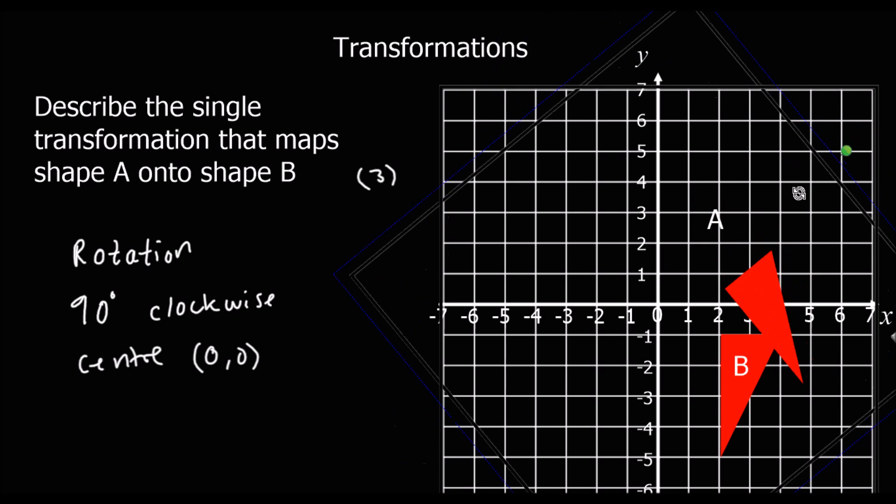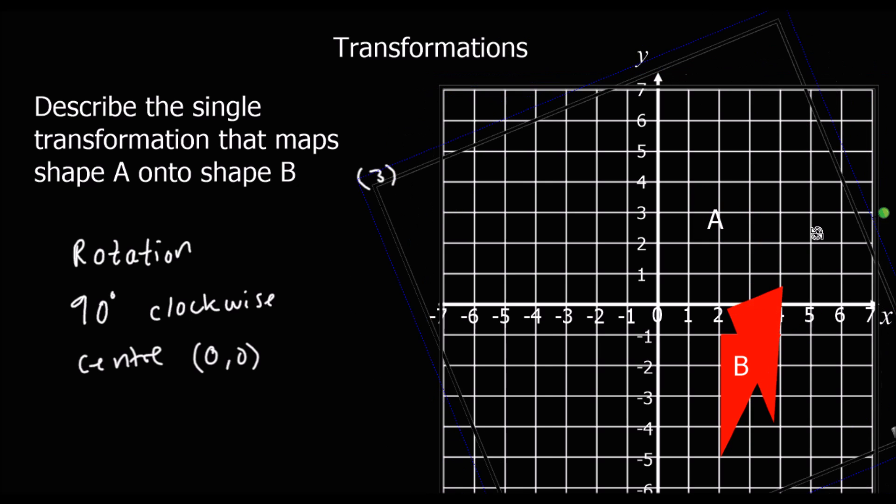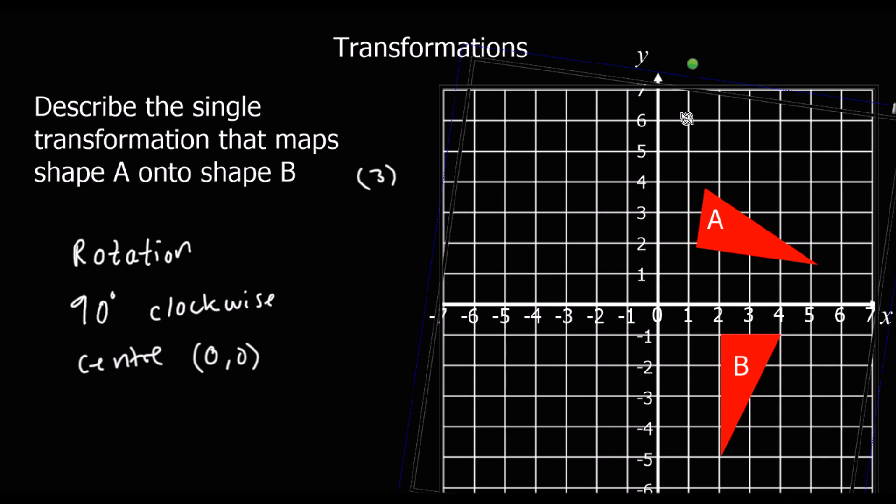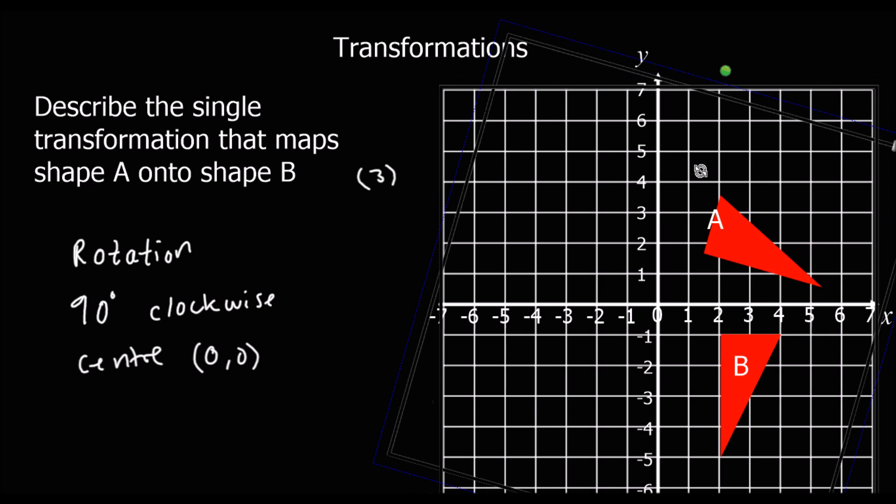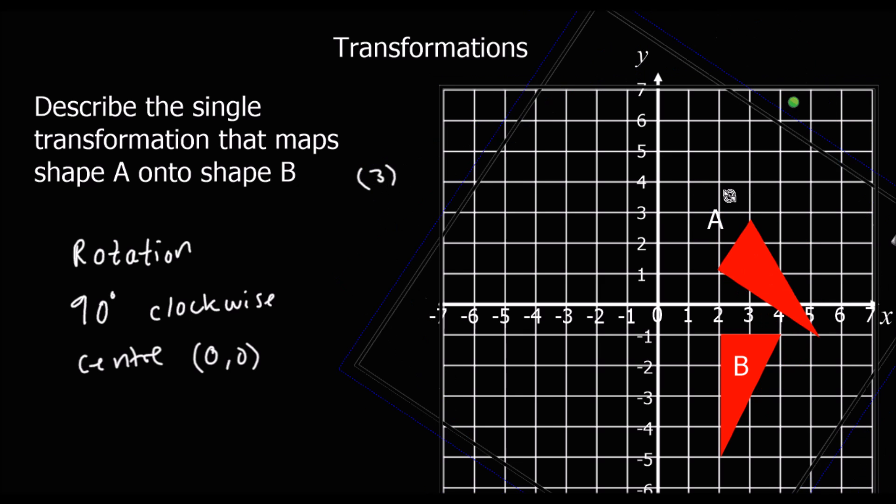We can see that it's been spun around. I'm holding the tracing paper here at zero, zero, and shape A spins around 90 degrees to get onto shape B.